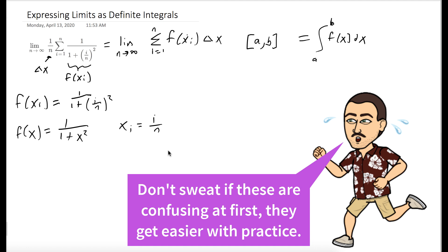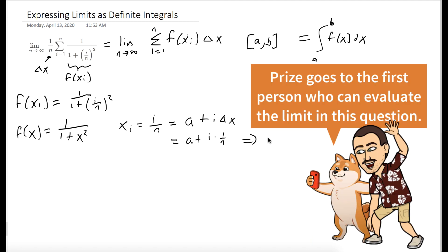We know x sub i is also equal to a plus i times delta x. We said delta x was 1 over n, so i over n is equal to a plus i over n. That gives us a equals 0. We also know that delta x is equal to b minus a over n, which is just b over n. But we know delta x is 1 over n, so b equals 1.